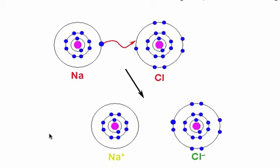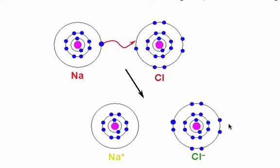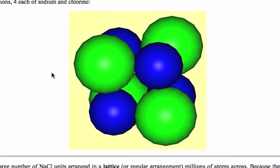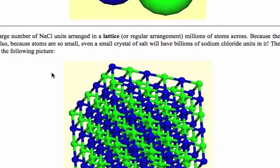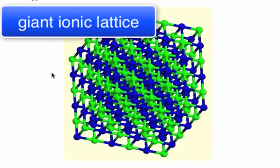We have an electron that's transferred from the sodium to the chlorine, which forms a positive sodium ion and a negative chloride ion. But they eventually form a giant lattice that looks like this. So it's not just one sodium ion, one chloride ion. It's many, many ions together in a giant lattice.